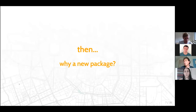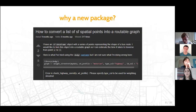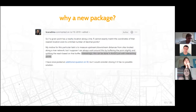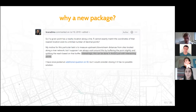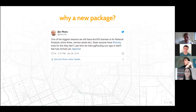So why a new package? We have the spatial and the network analysis, but there are still some open issues. For example, Stack Overflow questions like how to convert a list of spatial points into a routable graph, or how to estimate shortest path distances in a network kept showing up. People kept saying these things can be done in ArcGIS or other proprietary software, but why can't we do this in R? This is summarized in a tweet where someone said one of the biggest reasons we have ArcGIS licenses is for doing network analysis — so how can we change that?